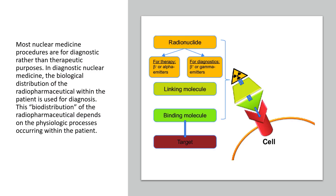Most nuclear medicine procedures are for diagnostic rather than therapeutic purposes. In a diagnostic nuclear medicine study, the biological distribution of the radiopharmaceutical within the patient is used for diagnosis — we're looking at the biodistribution. How fast does the radionuclide get uptake into the different types of tissue? If the tissue was non-cancerous, it would not proliferate as fast as cancerous tissues, so we get more uptake in rapidly proliferating cells such as cancer. Biodistribution allows us to take a look at the physiology of the tissue.